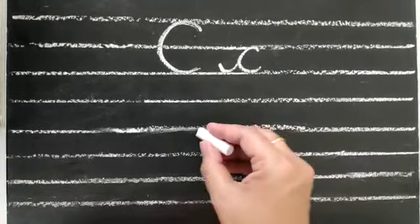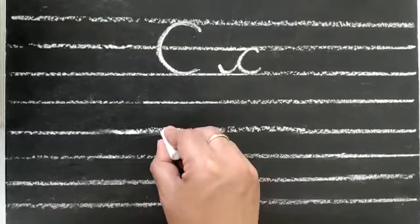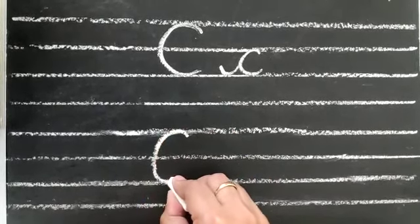So first we will make capital C and for that we will make a big curve from top line to third line.